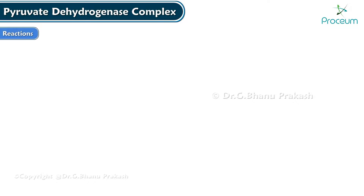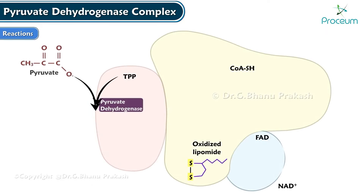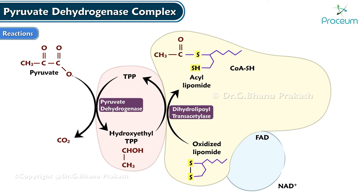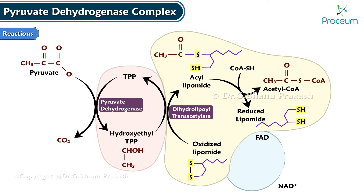The sequence of reactions of the PDH complex is described in the following steps. Firstly, pyruvate dehydrogenase with TPP as coenzyme decarboxylates pyruvate to hydroxyethyl thiamine pyrophosphate. Then dihydrolipoyl transacetylase converts hydroxyethyl TPP to TPP, and oxidized lipoamide to acetyl lipoamide, then transfers the acetyl group to coenzyme A to produce acetyl coenzyme A.